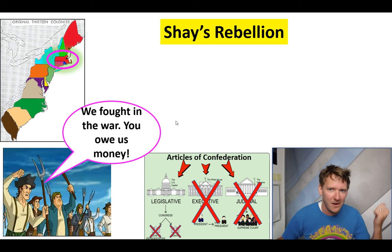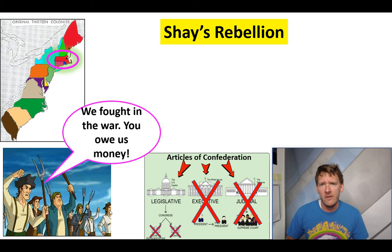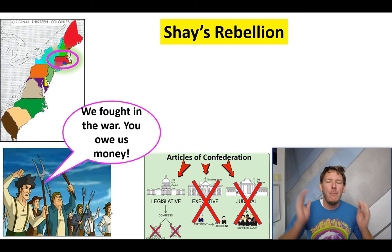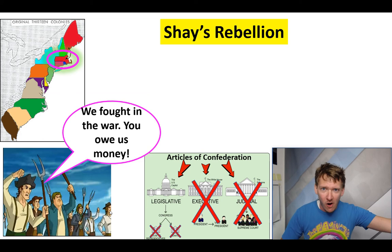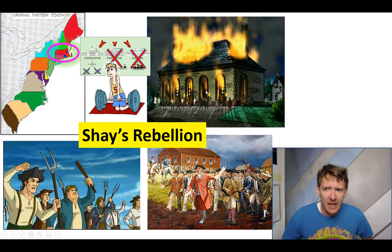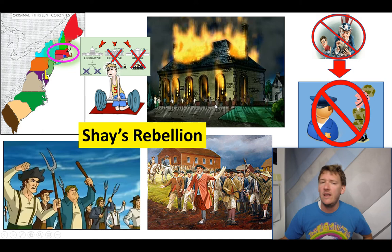Shays' Rebellion: during this time, there is a rebellion in Massachusetts. Farmers who fought during the American Revolution are owed money from the war. They are not paid, they have to borrow money to build their farms, and they go into debt. Instead of debt forgiveness, they're thrown into debtors' prison. Riots break out. The government can't really do anything — they're too weak. Eventually, the state governments are able to squash the riot, but it reveals a bigger problem: maybe we do need to make the government stronger.